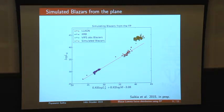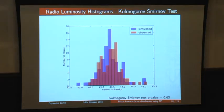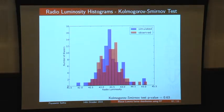We want to statistically quantify these similarities. For the minus-2 Lorentz factor distribution, in red is the observed radio luminosity distribution and in blue is the simulated radio luminosity distribution. Performing a KS test with the null hypothesis that both populations come from the same underlying distribution, we find a p-value of 0.63, which is high enough that we cannot reject the null hypothesis.